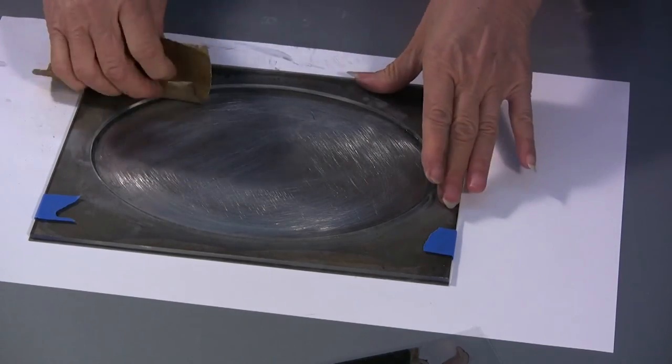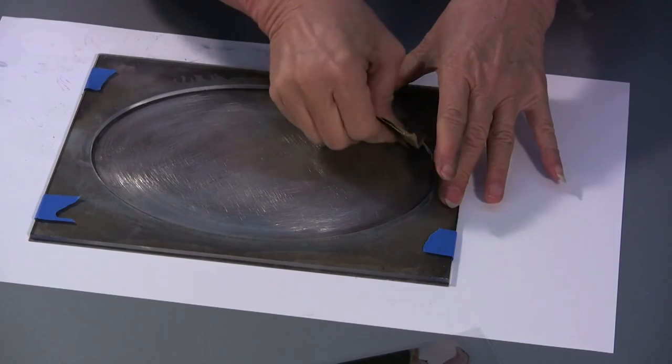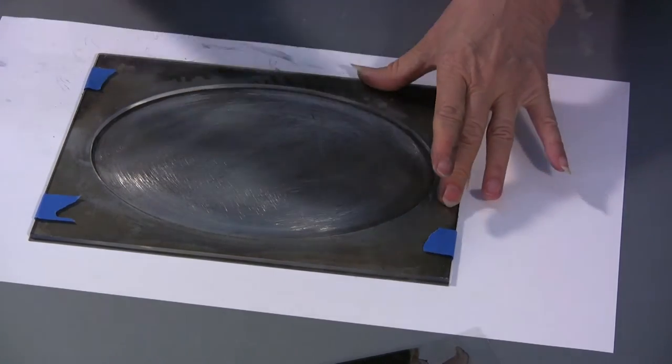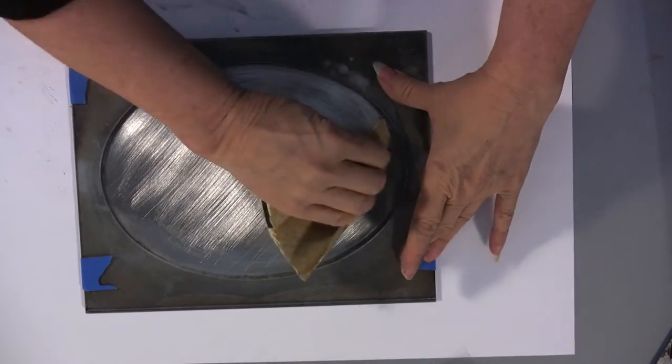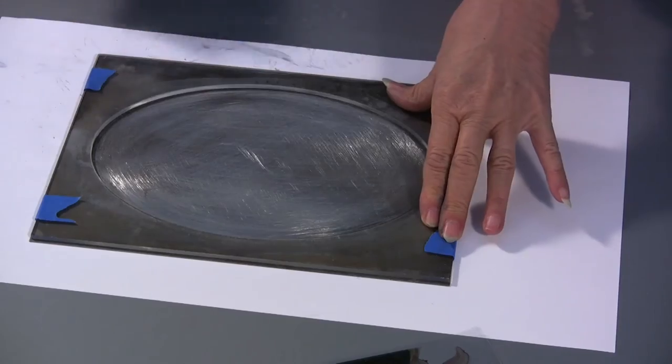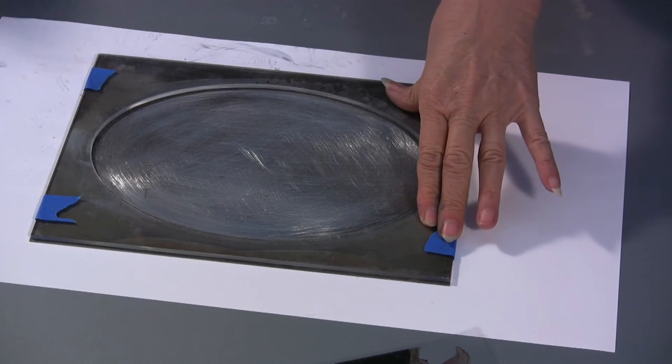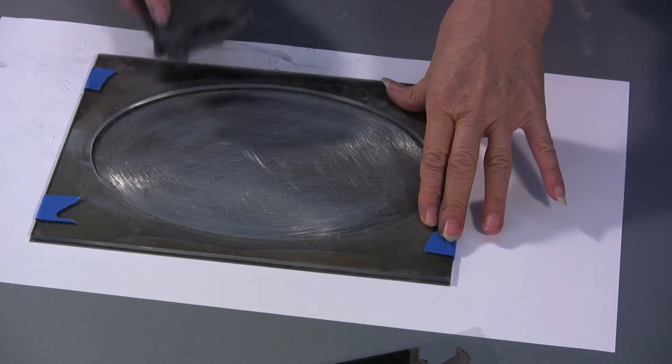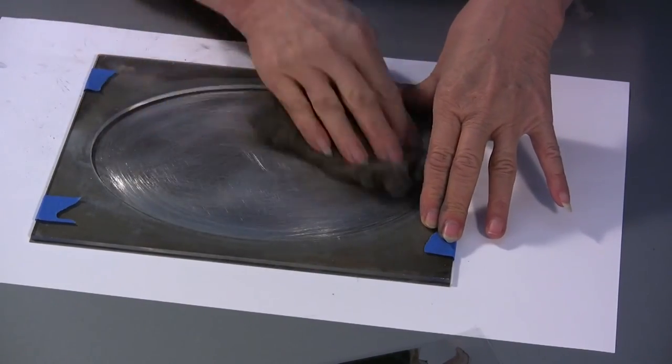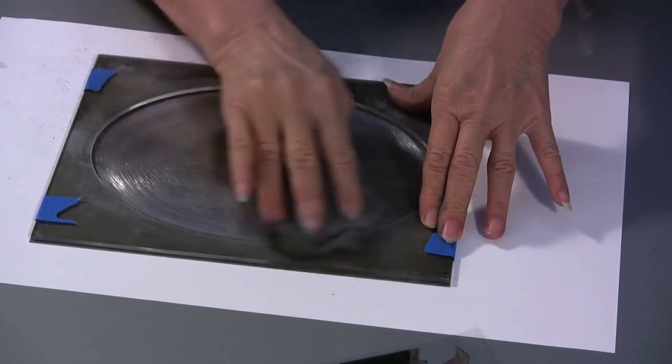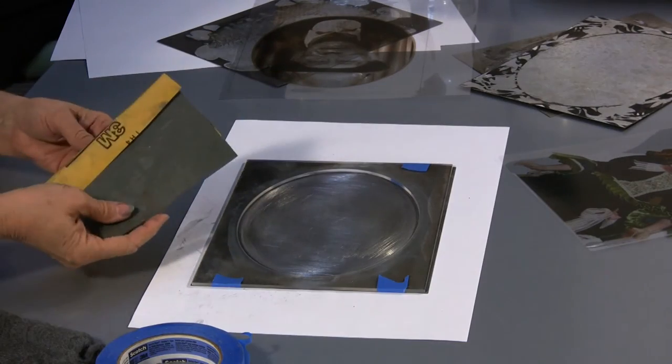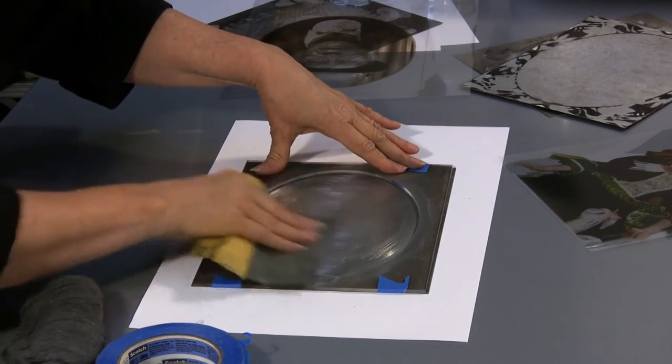Now I'm going to use some 100 grit sandpaper. I want to work this close to the edge, just as close as possible so that most of my image will fall right in this oval. Now that's pretty scratched up and I think I would like it to be a bit smoother than that. So this is a 4-0 steel wool that I'll buff this with a little bit.